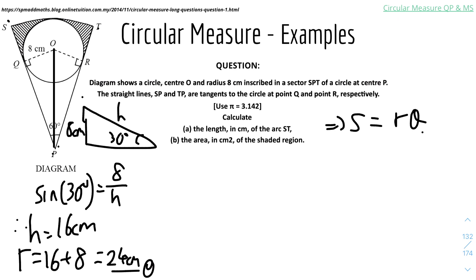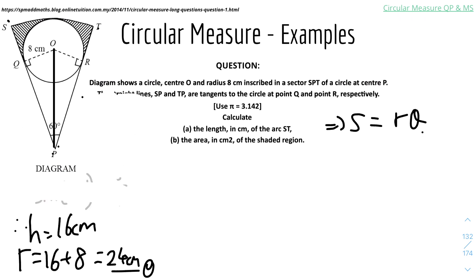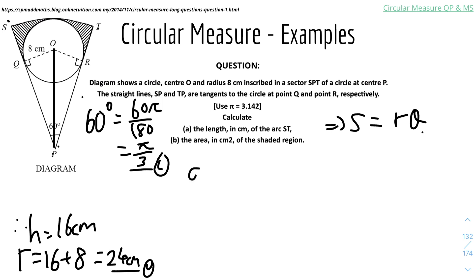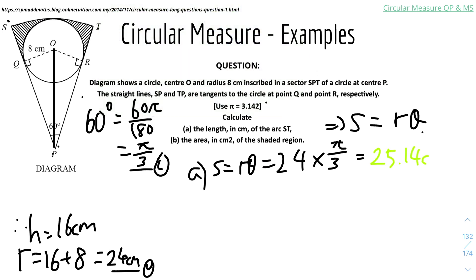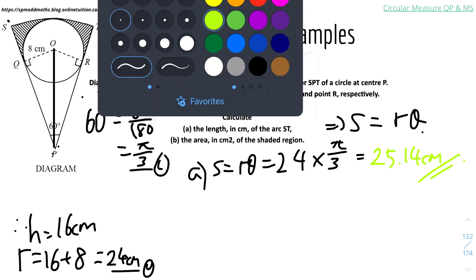Now convert 60° to radians: 60 × π/180 = π/3. Therefore, the arc length ST is s = rθ = 24 × π/3. Using π = 3.142, this gives approximately 25.14 cm.